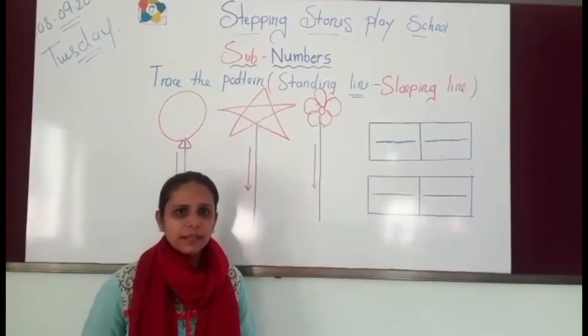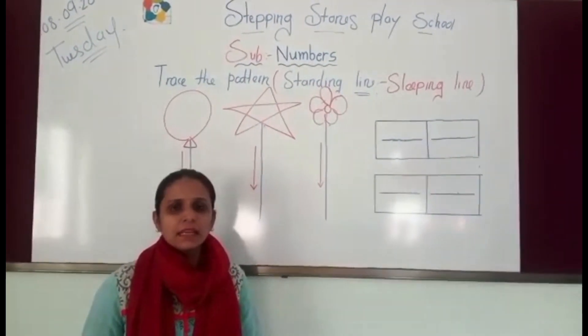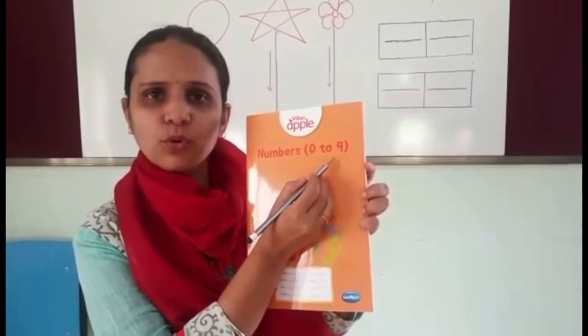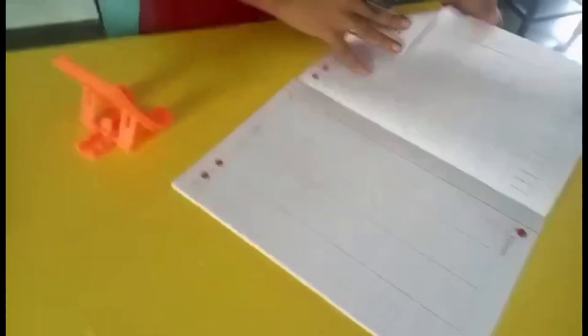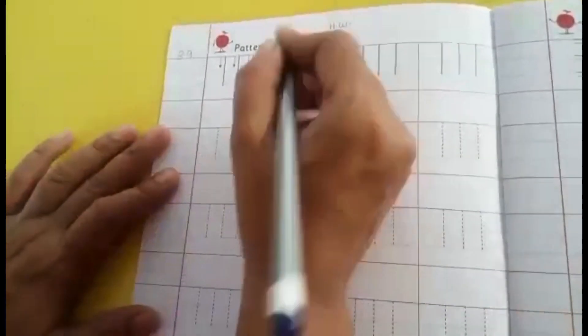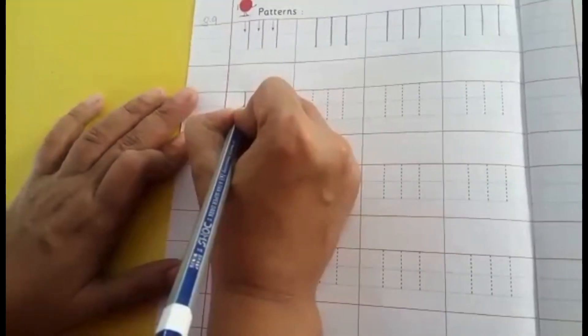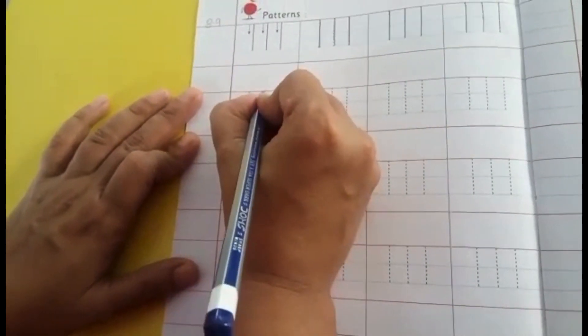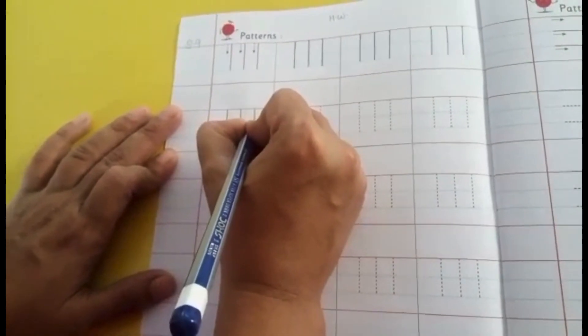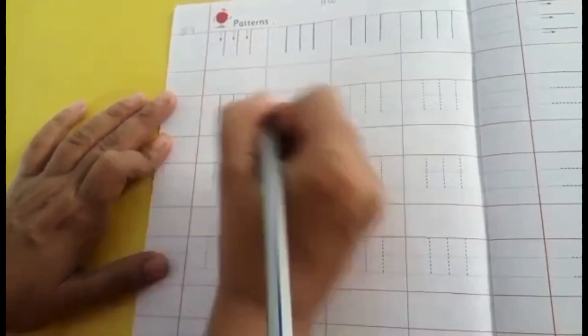I hope now you are clear with standing line and sleeping line. Now see today's homework — you have to write in this book. This is the numbers book, 0 to 9. Open page number 2 and make standing lines: start from top, join dot to dot, come down. Complete this page with the help of your parents. That's all for today, thank you.